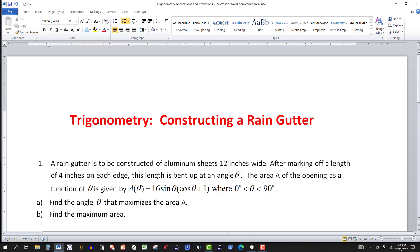In this video we're going to use some trigonometry to construct a rain gutter. Here's the information given. A rain gutter is to be constructed of aluminum sheets 12 inches wide.